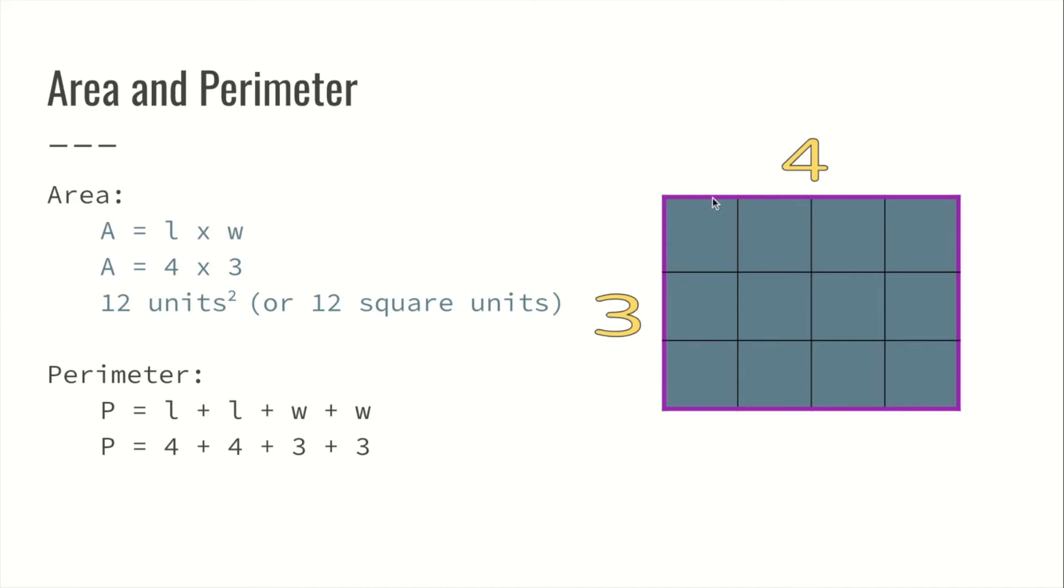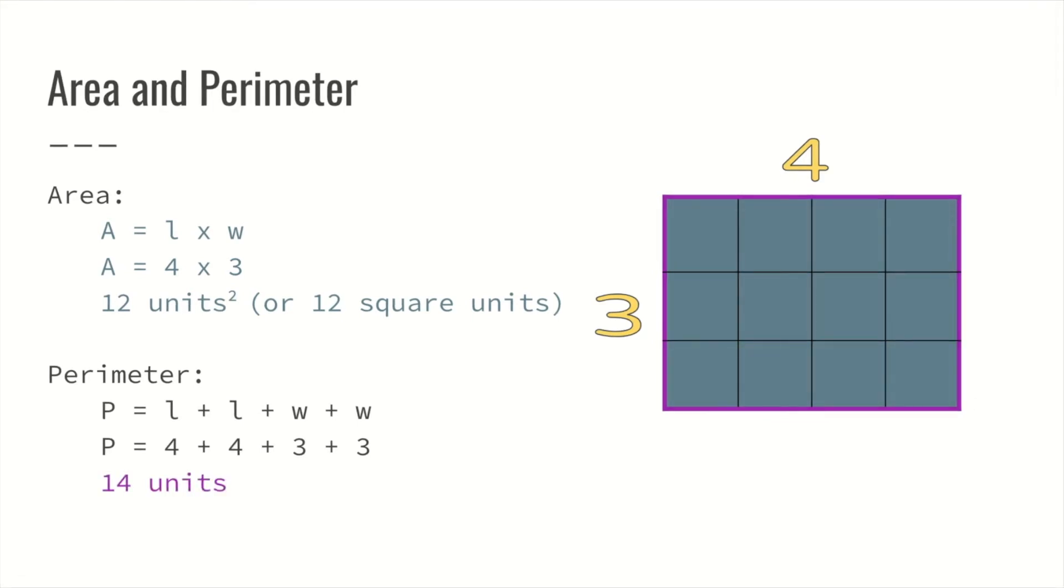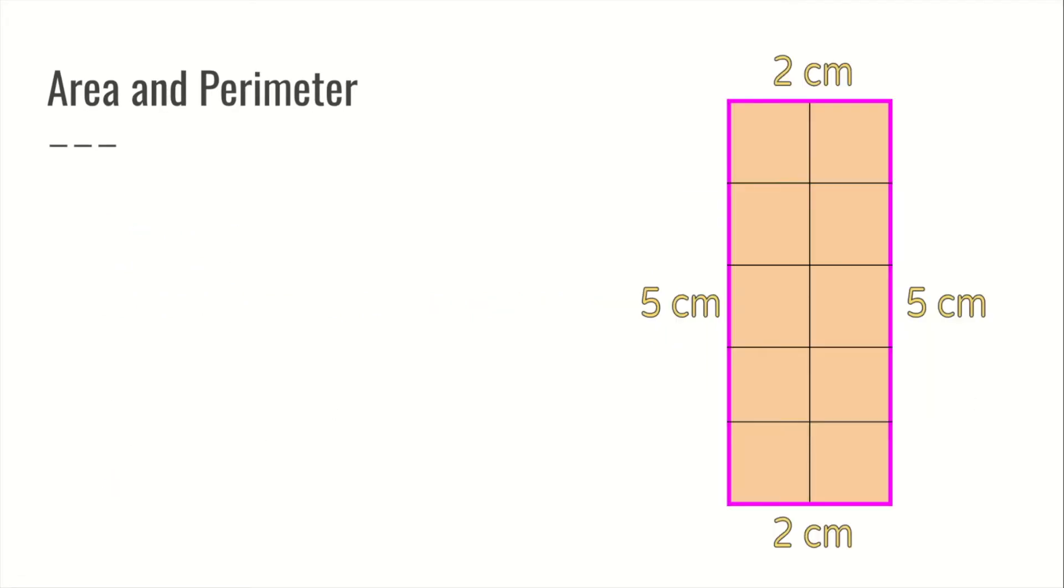Perimeter equals 4 plus 4 plus 3 plus 3. 14 units. 14 units. We have another figure here, two-dimensional. This time we know the unit of measurement. We're measuring in centimeters. The dimensions for this shape are 5 centimeters and 2 centimeters.